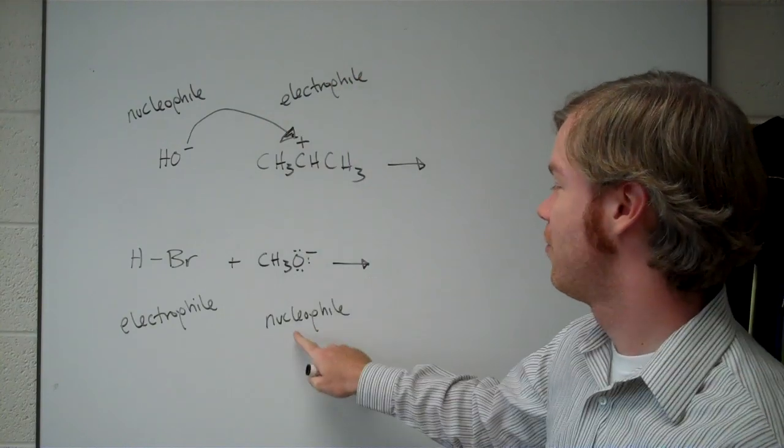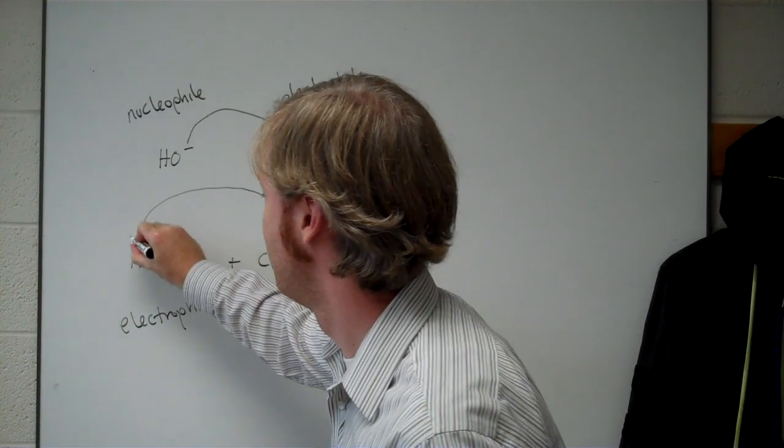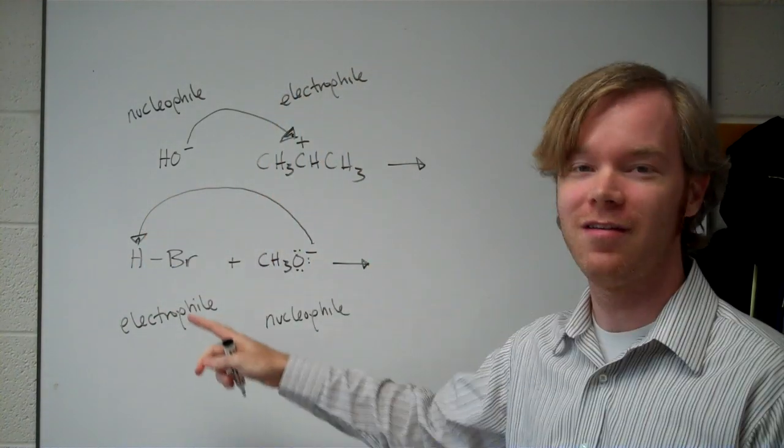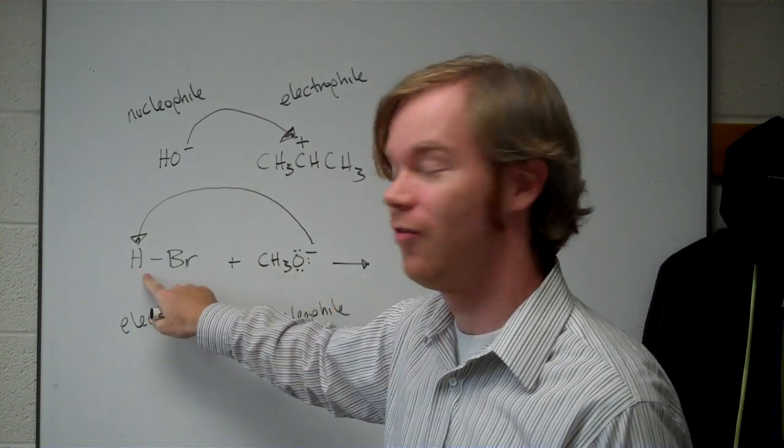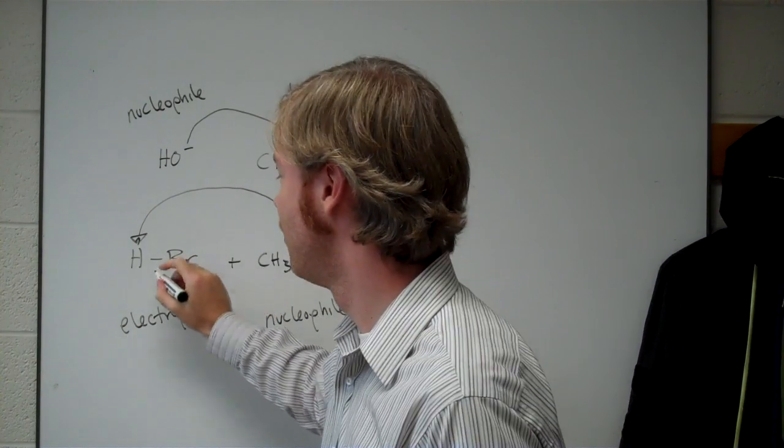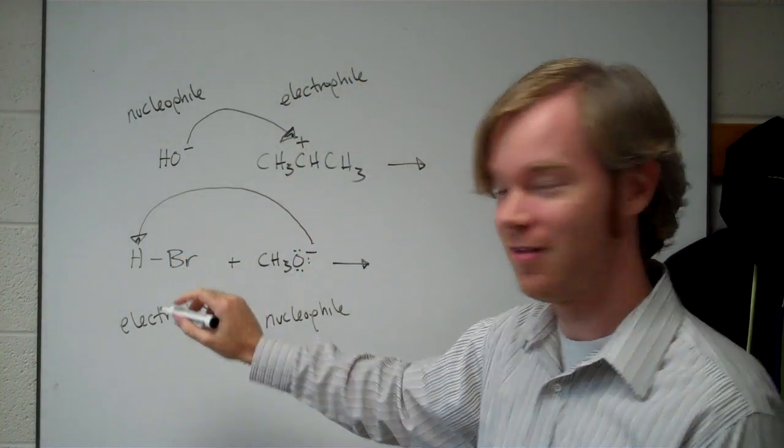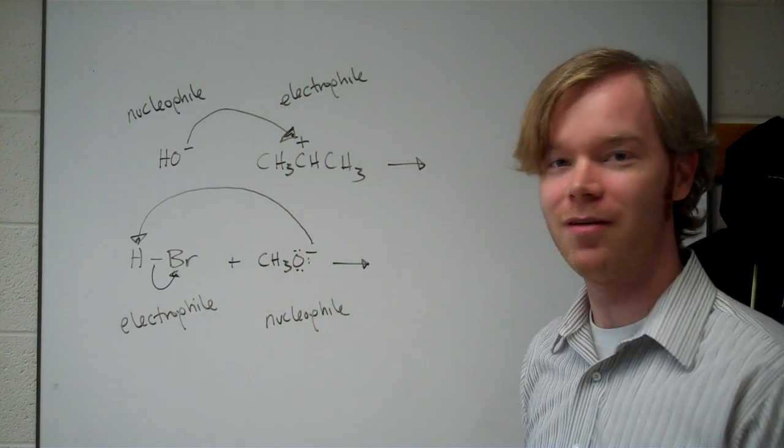And the same way here, start at the nucleophile and curve to the electrophile, in this case, the acidic hydrogen atom. And here, if we're drawing a new bond here, then we need to break the acid bond here. So we start at the electrons and go to the negative atom.